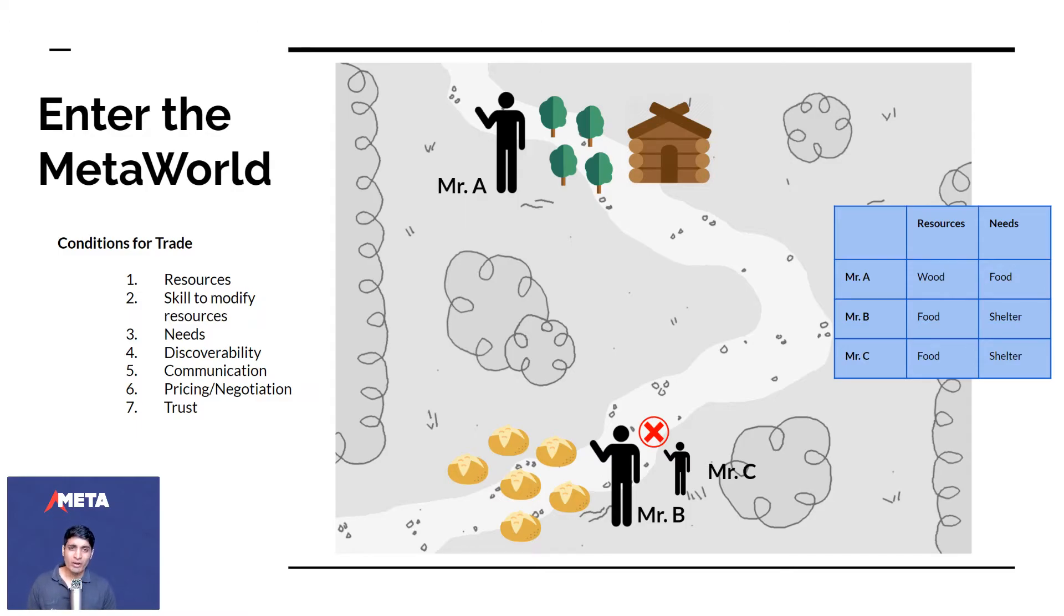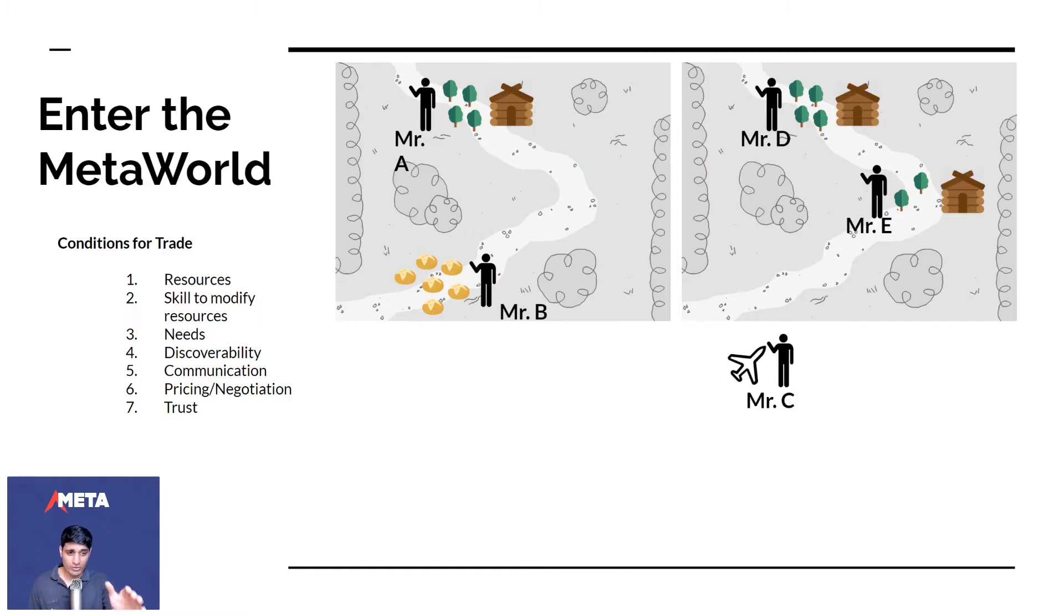Say Mr. B and Mr. C have a fight because Mr. C says, you know what, I'm helping you get the potatoes. The only thing you have, the only advantage you have over me is that you discovered Mr. A first, you built the trust first, but you're paying me only maybe 10% of the revenues. Whereas I'm also getting the potatoes, I'm doing all the hard work. So maybe they have an argument. Mr. C takes a flight outside. He leaves this first meta world with Mr. A and B and he finds another meta world with Mr. D and E. And Mr. D and E both have houses, both have wood. So Mr. C has found a new market.